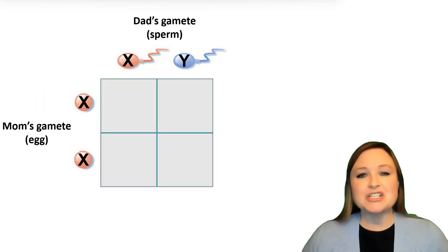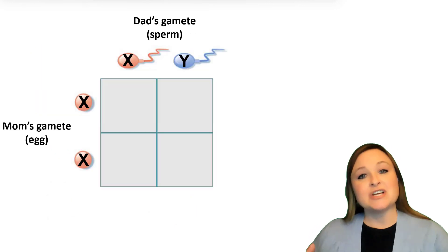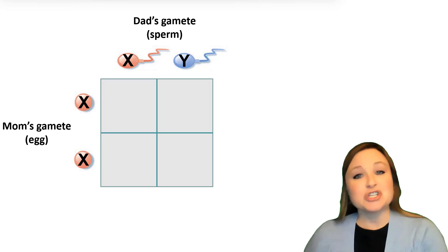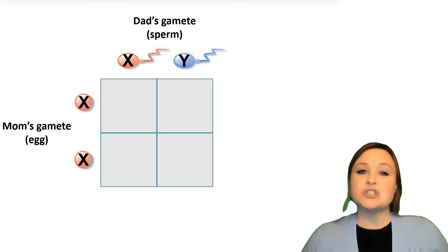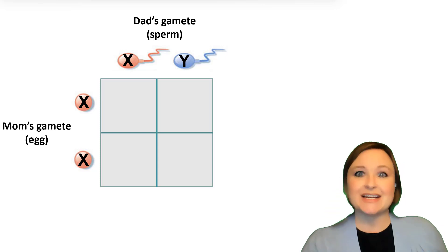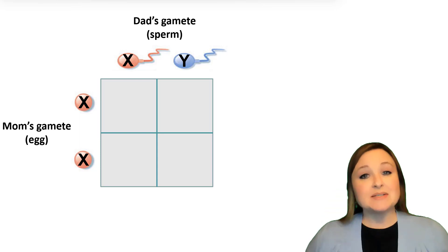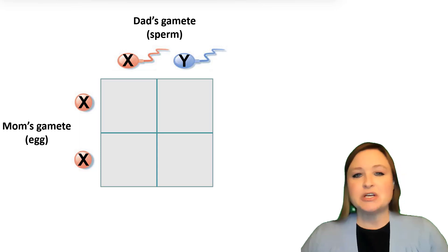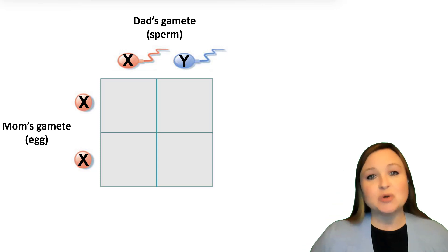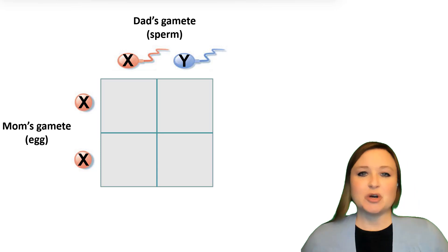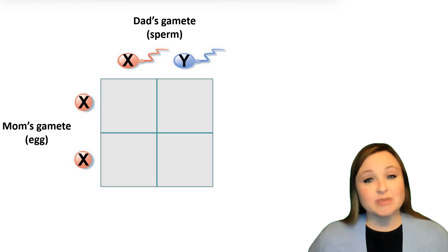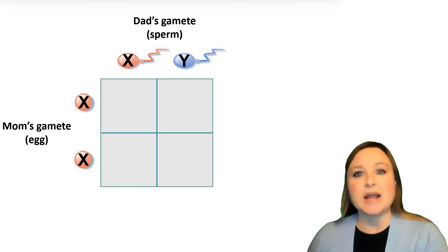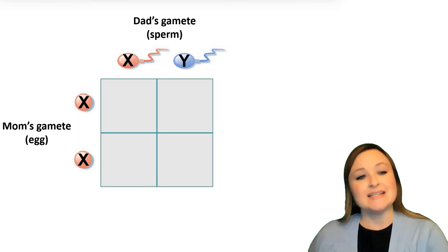Now we can use this information to find out how different genders are formed in the offspring that are possible. On the left we have the two options for mom's eggs — her gametes. Because mom is a female, she has two X chromosomes, so she can pass along one X chromosome or the other. Dad, being male, has an X chromosome and a Y chromosome, so the X chromosome will be in one sperm, whereas the Y chromosome will be in a different sperm.